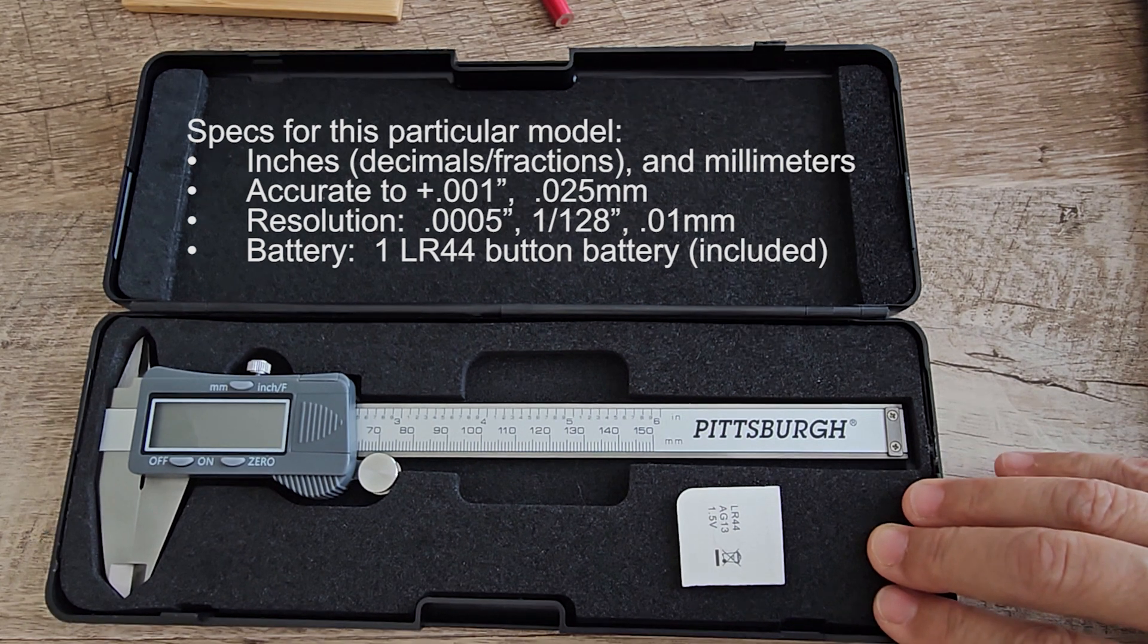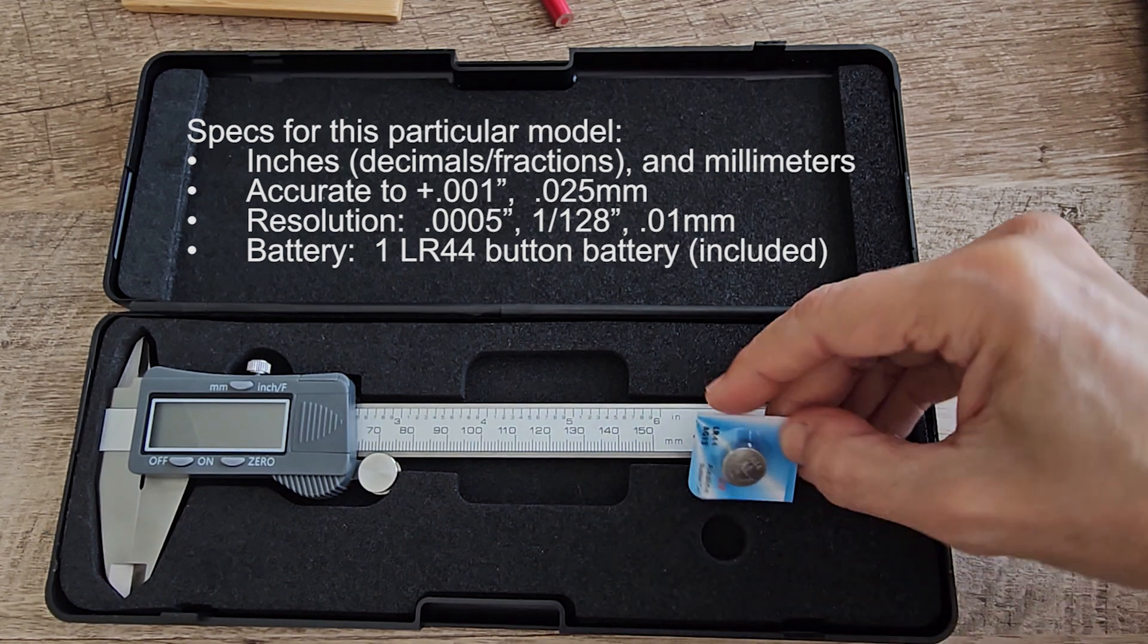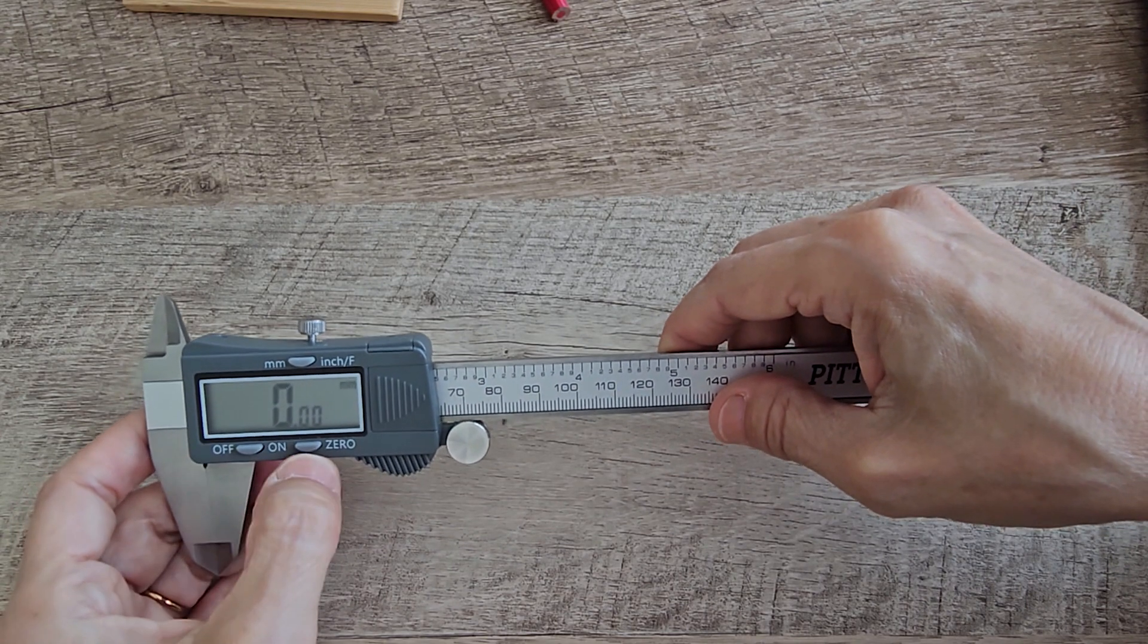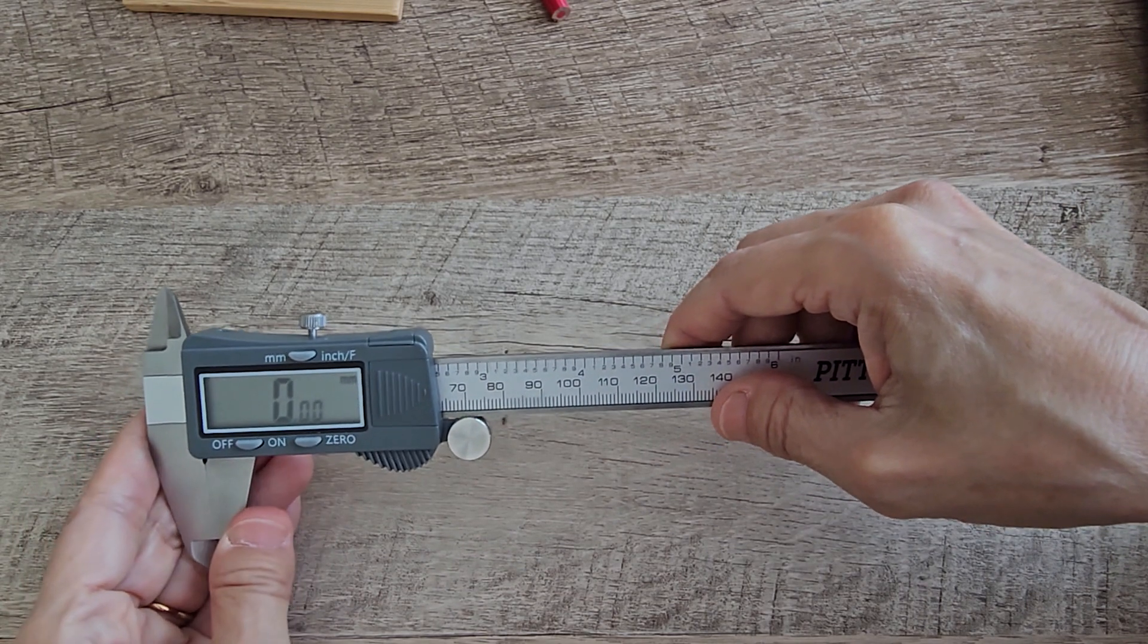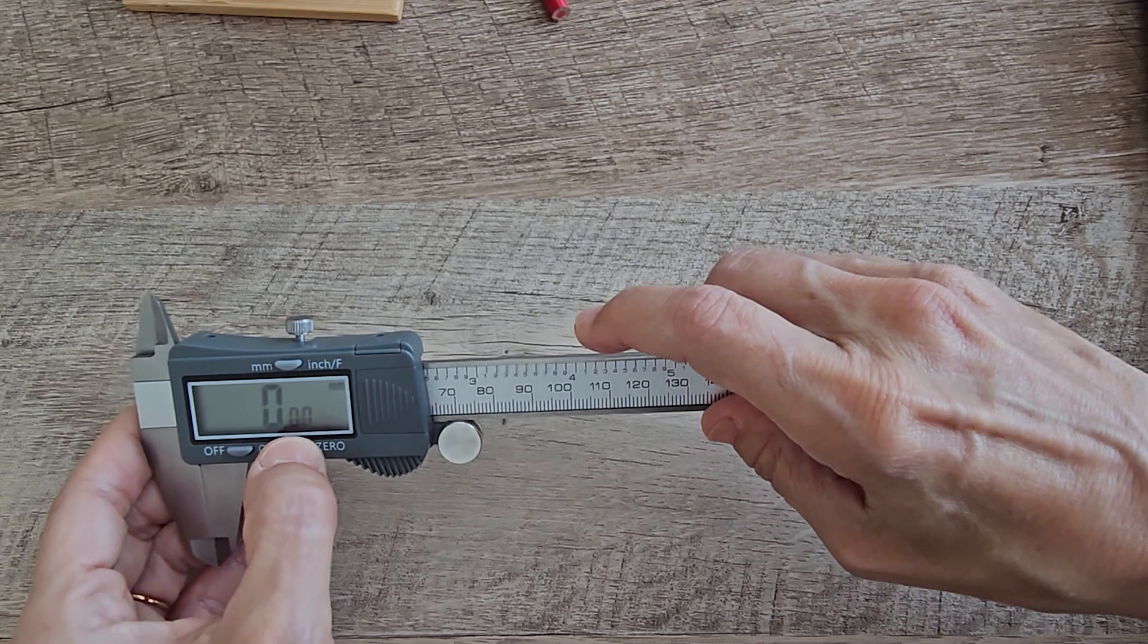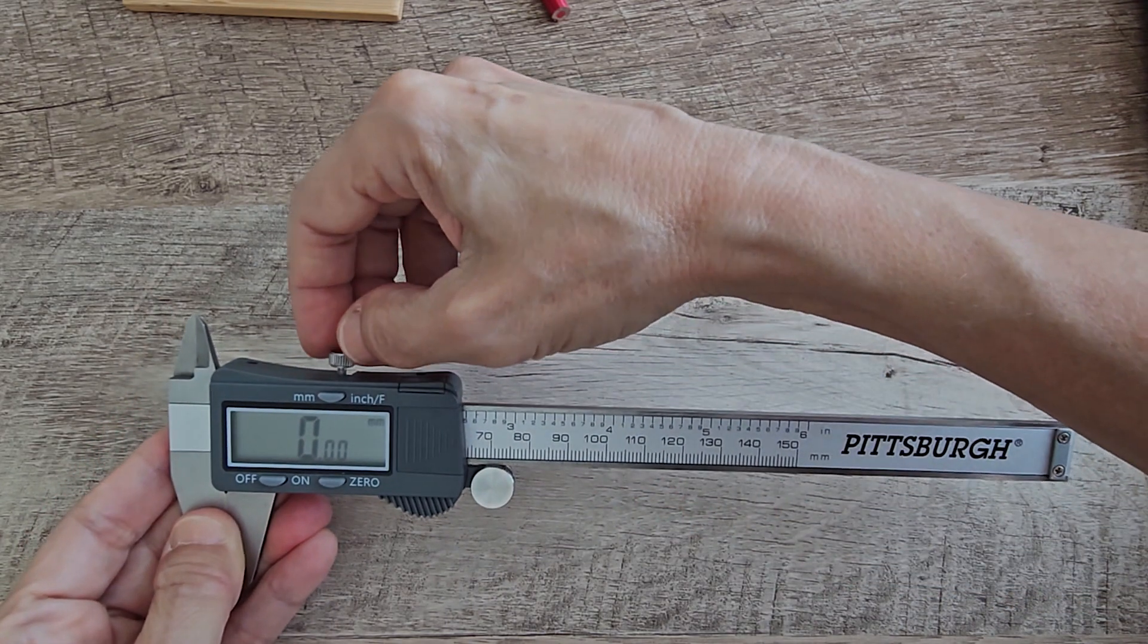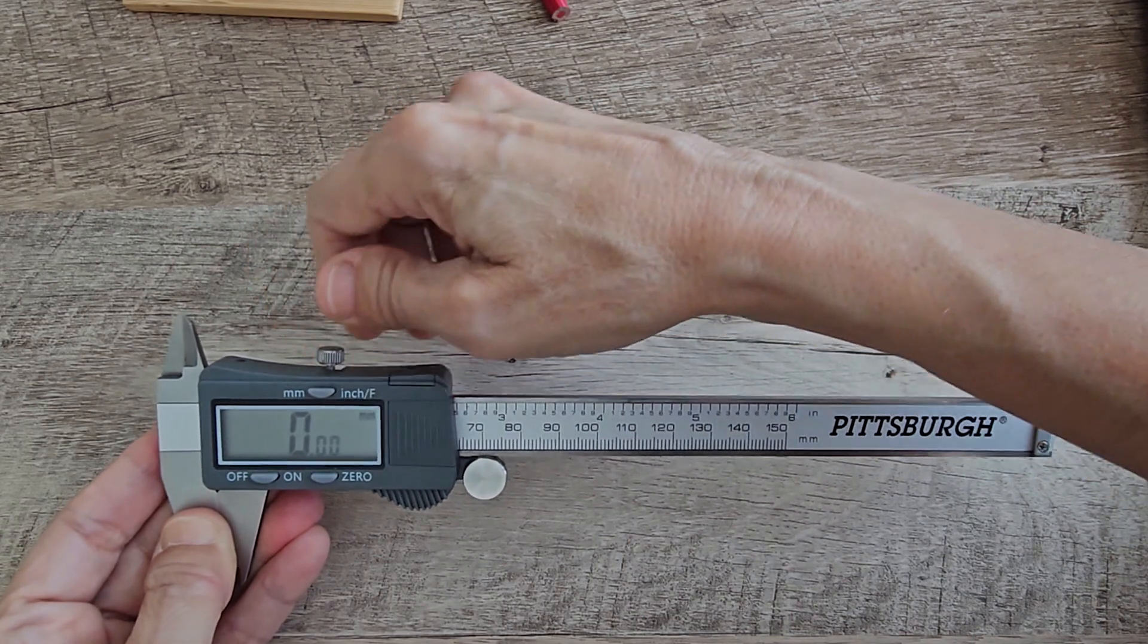It comes with this nice padded case, and ours came with a spare battery. The buttons are the power button, the zero button which calibrates it. You want to make sure it's closed and hit zero before all measurements. And this little screw locks it in place.